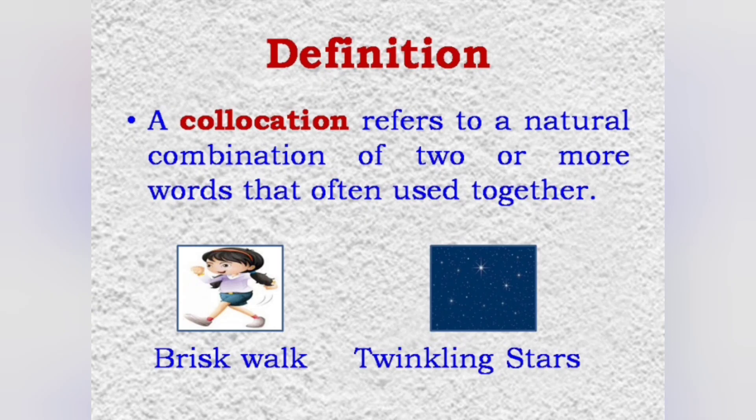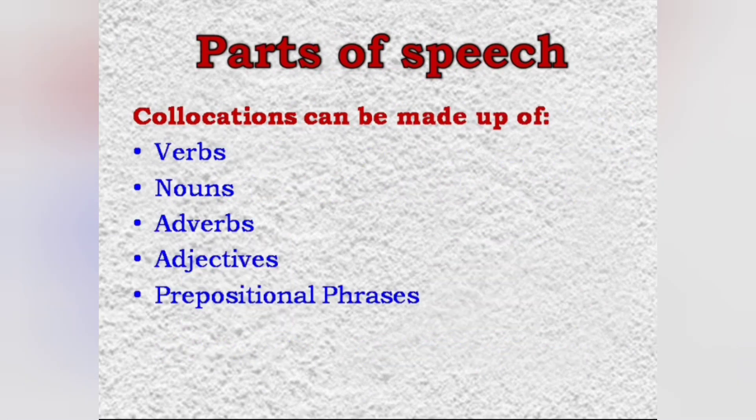A collocation refers to a natural combination of two or more words that often use together such as brisk walk, twinkling stars, etc. Collocations can be made up of any kinds of words such as verbs, nouns, adverbs, adjectives, prepositional phrases and also with their combinations.